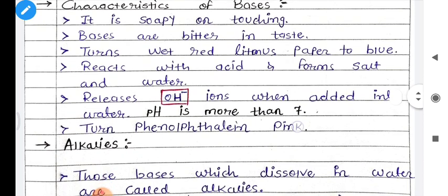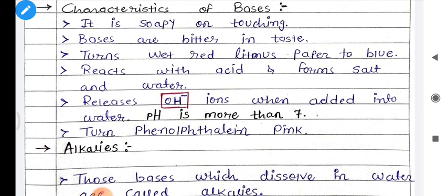Now let us understand the characteristics of bases. The first characteristic of base — if you dissolve a base substance in water and rub it between your fingers, it feels soapy in nature, meaning it generates small bubbles. So the first characteristic of base is soapy in nature. Second, bases are bitter in taste — like coffee, which is one kind of base. So bitter substances are called bases. Third, it turns red litmus paper to blue. Whenever any substance changes the red litmus paper to blue color, then we can say that the substance is a base.